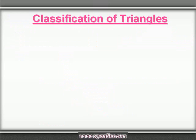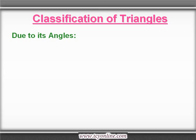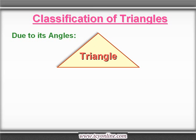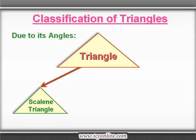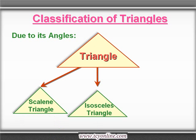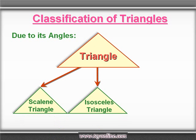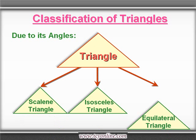Let's learn about different types of triangles. On the basis of angles, triangles can be of three types: scalene triangle, isosceles triangle, or equilateral triangle.